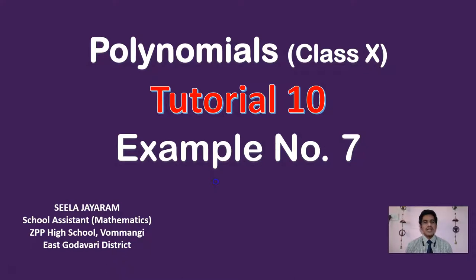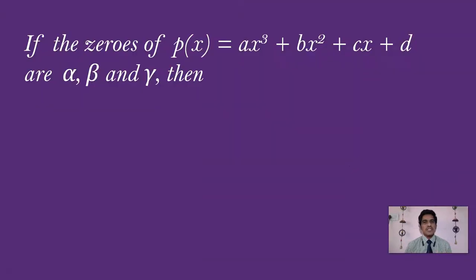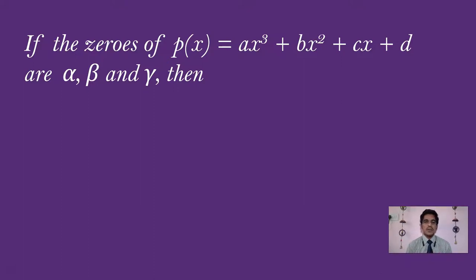Example number 7 deals with cubic polynomial zeros and their relation to the coefficients. Let us recollect what is the relation between the coefficients and zeros of a cubic polynomial — we have already learnt that in your previous tutorial.